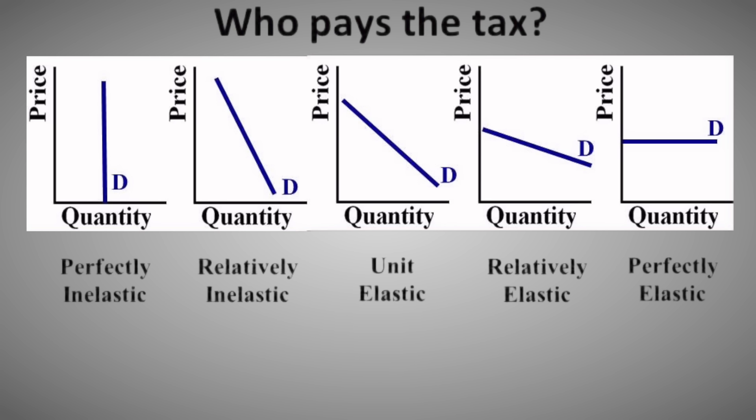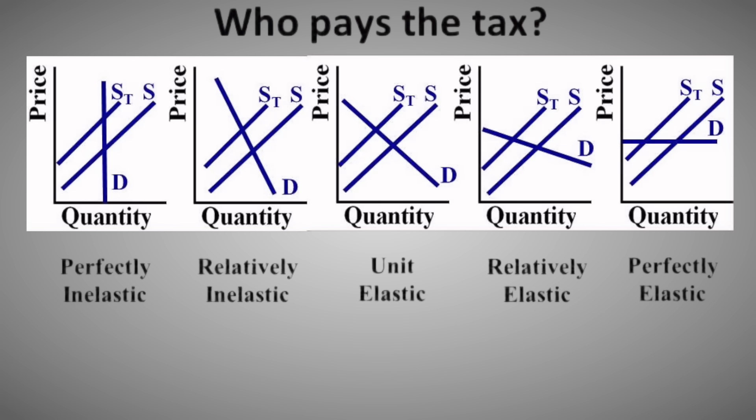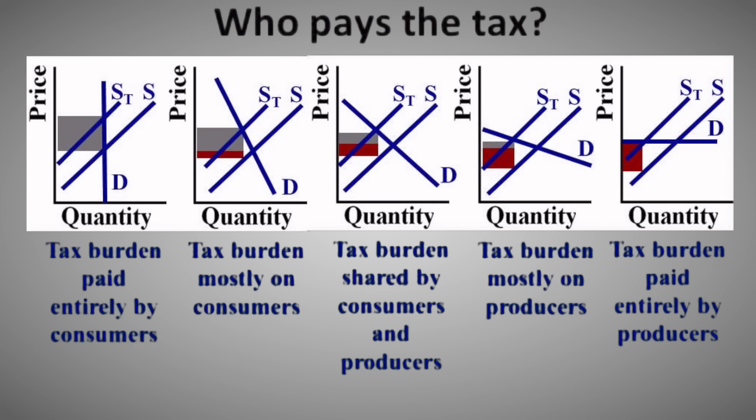Right now, you're looking at the demand curve with different elasticities. You've got perfectly inelastic, relatively inelastic, unit elastic, relatively elastic, and perfectly elastic. Now what I'm going to do is put a supply curve on each one of these demand curves that is unit elastic. And I'm going to put the same per unit tax on every single one of these demand curves. The boxes right here are the total tax revenue that goes to the government, and it shows you who's paying the tax. When the demand is perfectly inelastic, then the consumers pay all of the tax. Producers pay none of it.